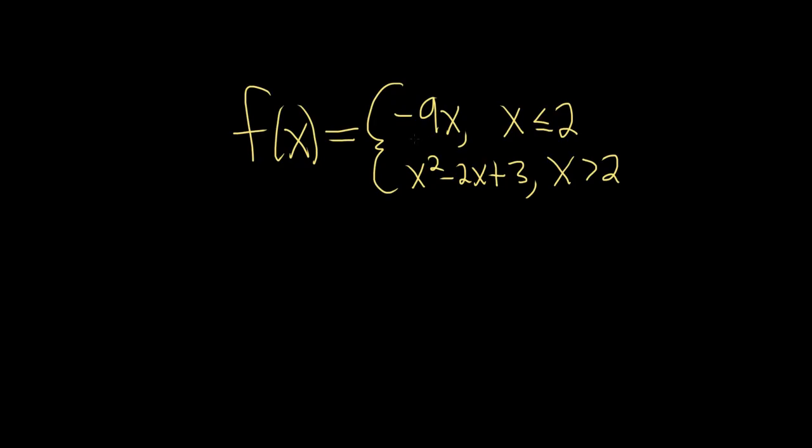Negative 9x by itself is continuous, and x squared minus 2x plus 3 by itself is continuous. The problem comes into play when you try to put them together into a single function. So the only problem might be at 2.